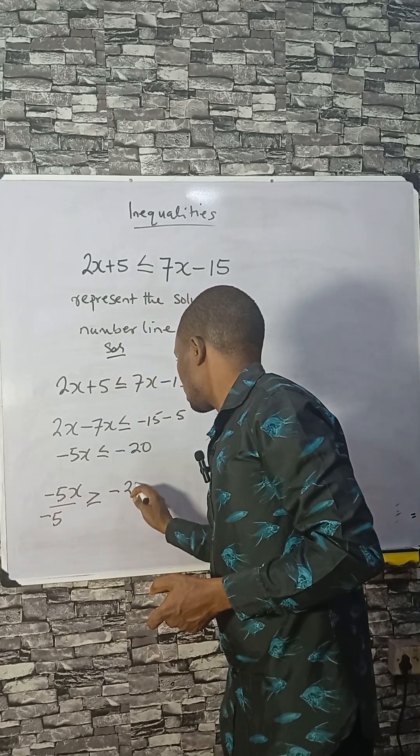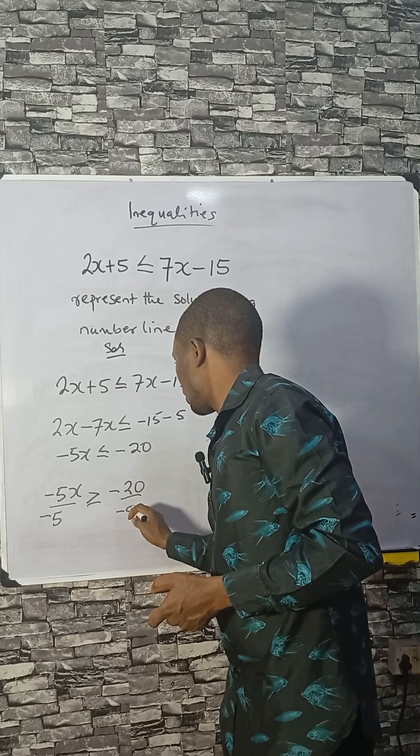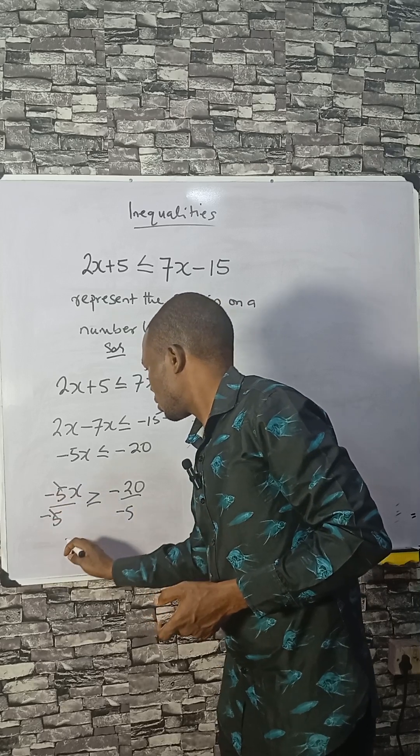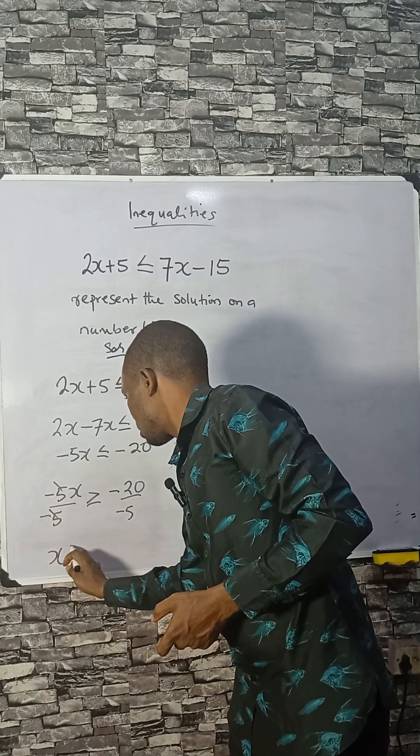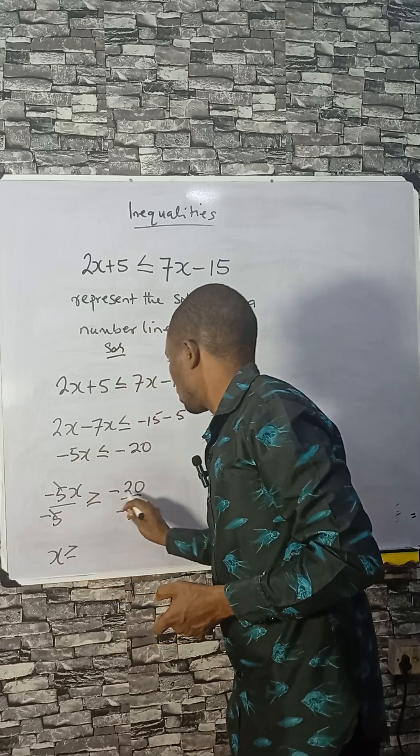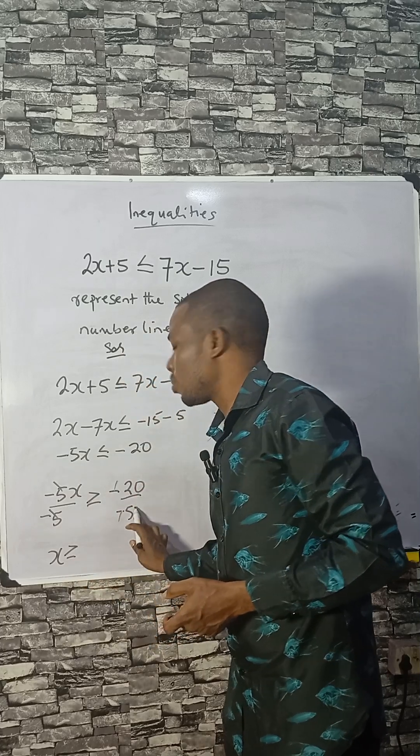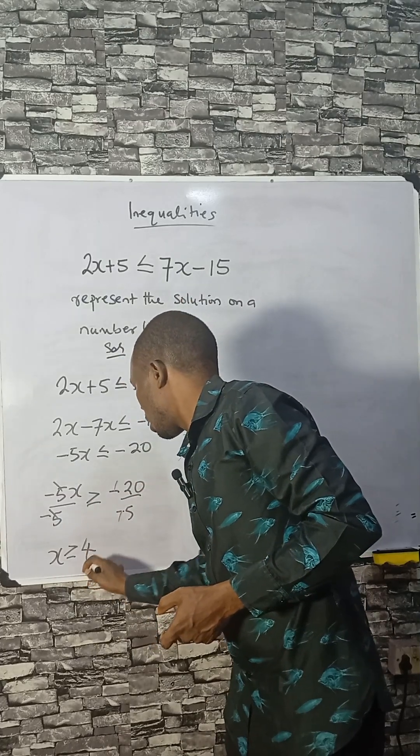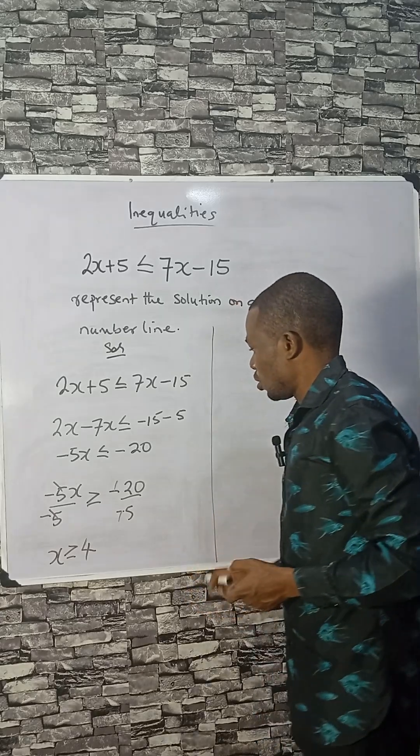So -20 divided by -5 gives us 4. Our answer is x ≥ 4. Now we need to represent this solution on a number line.